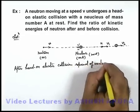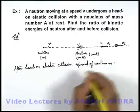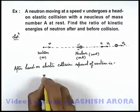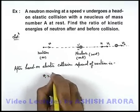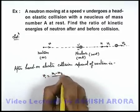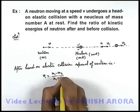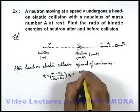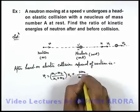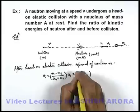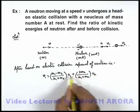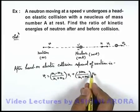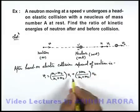After head-on elastic collision, speed of neutron is, this can be given by the expression: v1 = (m1 - m2)/(m1 + m2) × u1 + 2m2/(m1 + m2) × u2, where u1 and u2 are the speed of first and second particle before collision.